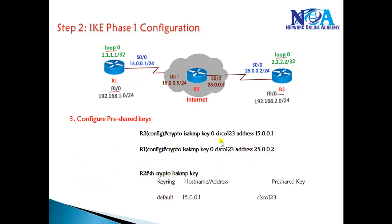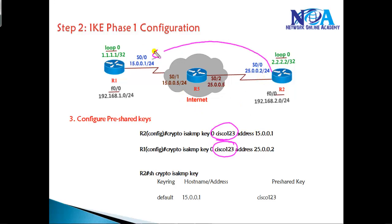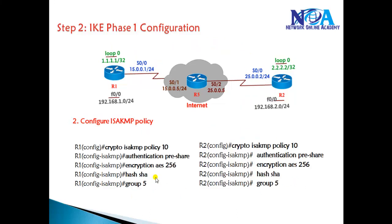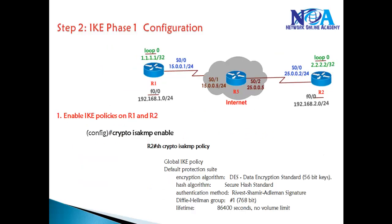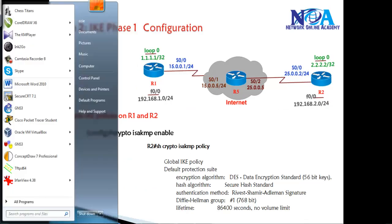Since we are using pre-shared keys, we configure a pre-shared key with the password cisco123 on both sides. We then define the remote peer address — on Router 2 the remote peer is 25.0.0.2, and on Router 1 the remote peer is 15.0.0.1. We can verify this using: show crypto isakmp key. To verify the ISAKMP policy, use: show crypto isakmp policy.